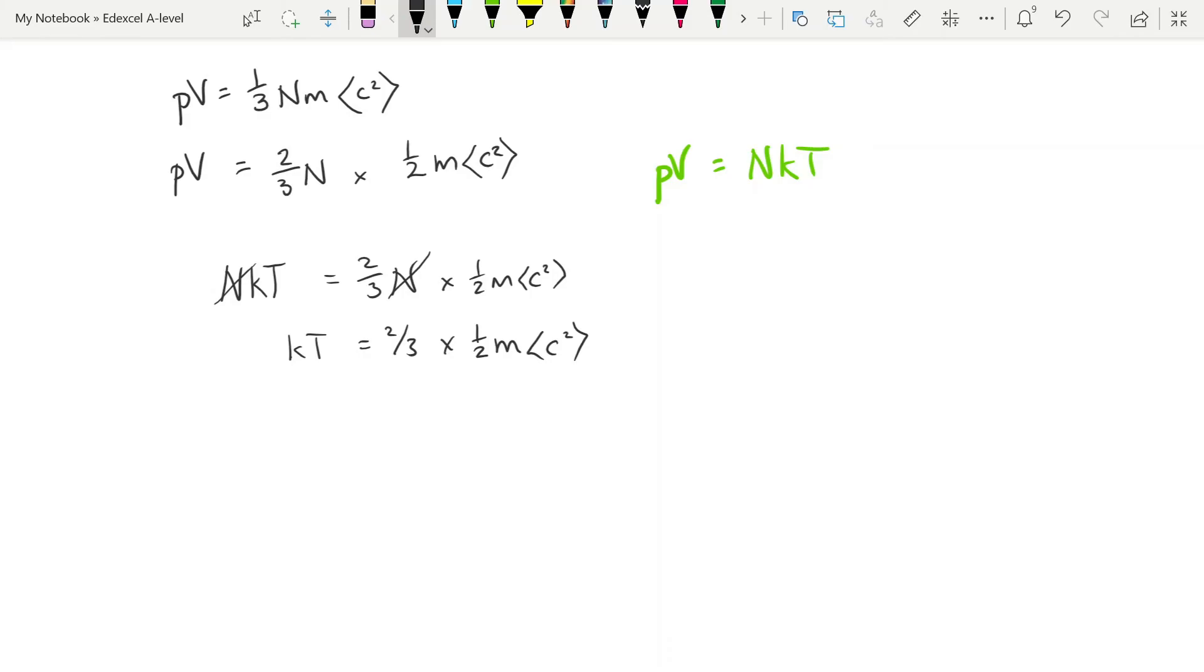Now you might think to yourself, well, why doesn't he just multiply the 2/3 by the half? Because we want to keep this as a whole expression, because that is the expression for kinetic energy. So instead, we're going to take the 2/3 over here and divide by the 2/3. And so that becomes 3/2 kT is equal to 1/2 mc². And that is what we were after.